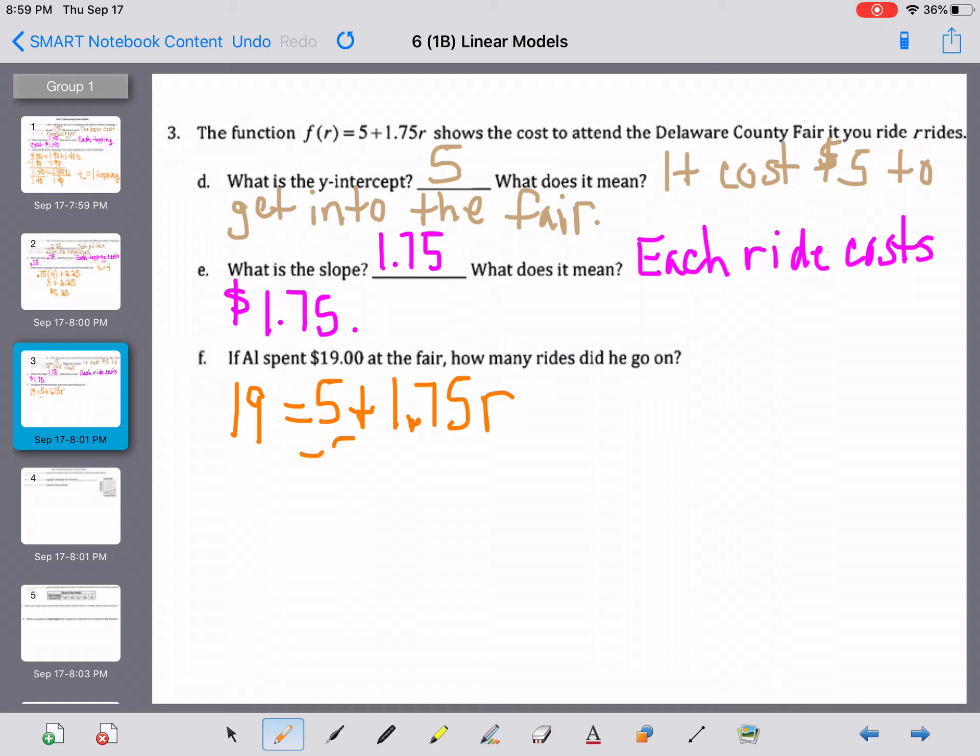So we're going to subtract 5 from both sides. And we get 14 = 1.75r. We're trying to figure out what r equals, and it's 1.75 multiplied by r, so we have to undo that. So we're going to divide both sides by 1.75. And when we do, r = 8, so 8 rides.